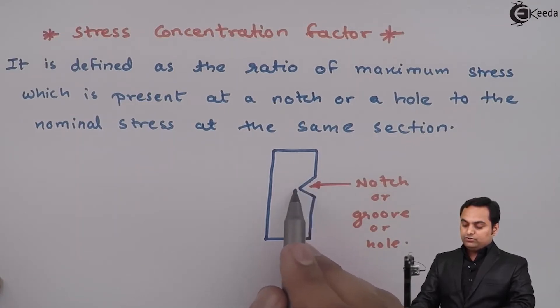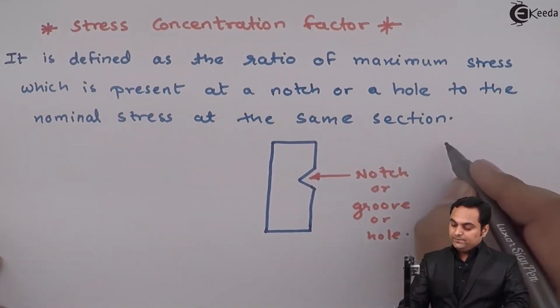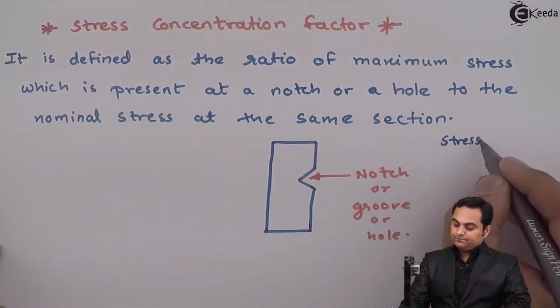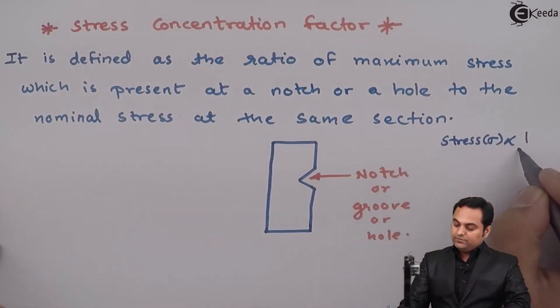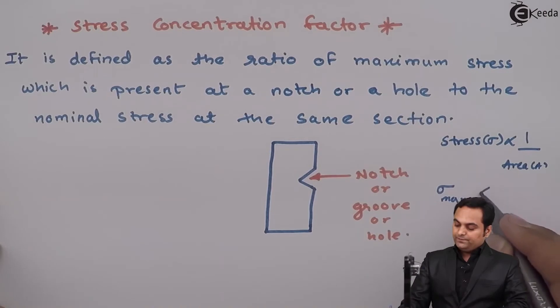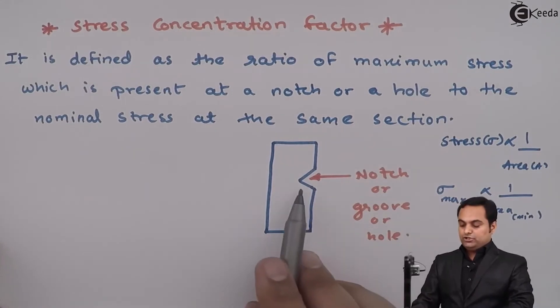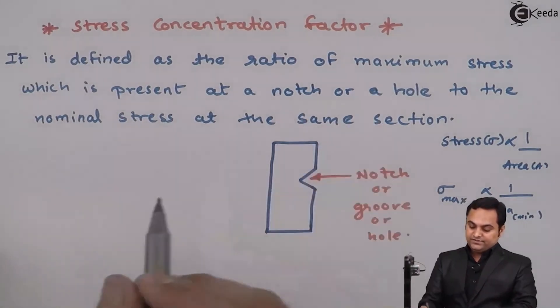At the notch, area goes on decreasing so area is minimum. And as we know the relation that stress is inversely proportional to area, so stress will be maximum where the area is minimum. So at the notch the area is minimum.